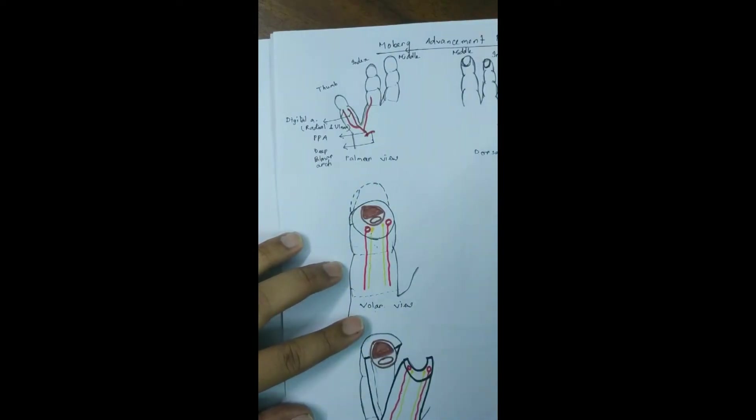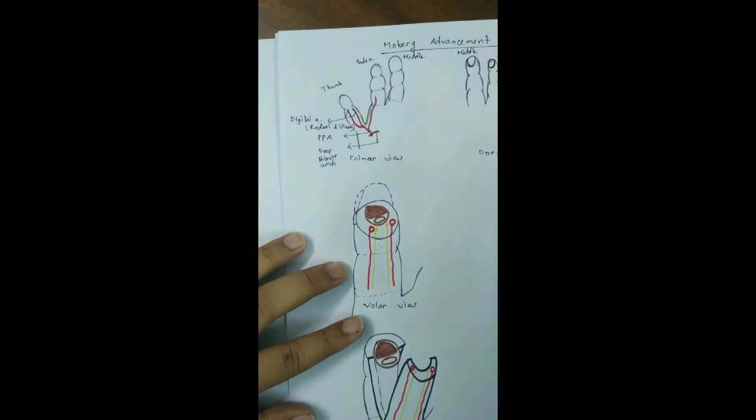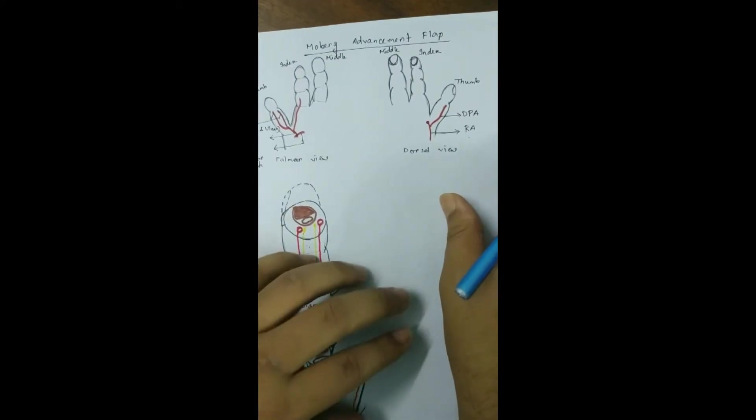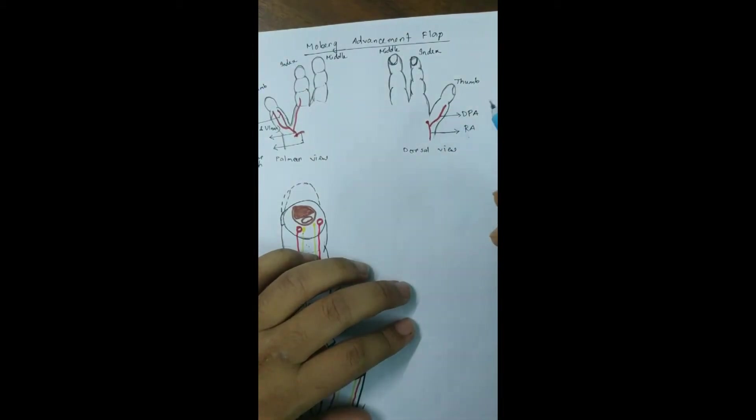What makes the thumb unique is that the dorsum of the thumb has an independent blood supply from the dorsalis pollicis artery. It is a branch of the terminal part of the radial artery.